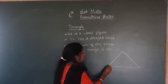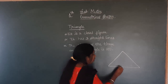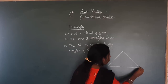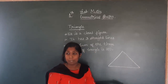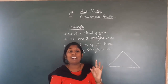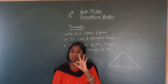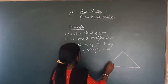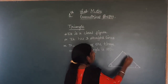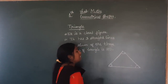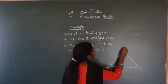Triangle has three sides. One, two and three. In the name itself: tri means three. So triangle has three sides. The angles of this triangle are at points A, B, and C. A angle is 60 degrees, B angle is 60 degrees, C angle is 60 degrees.